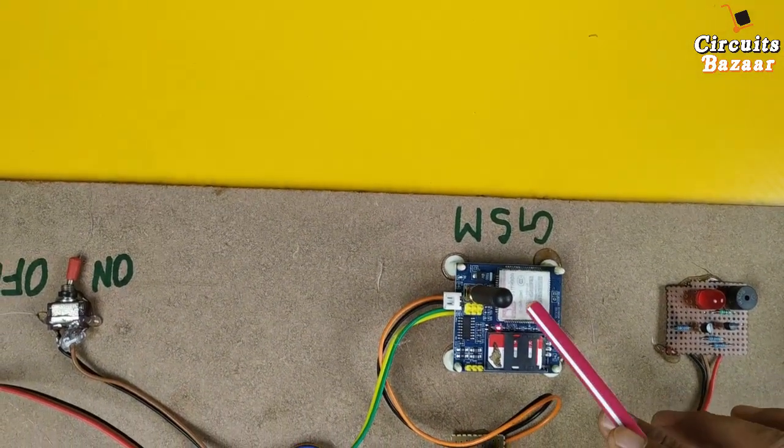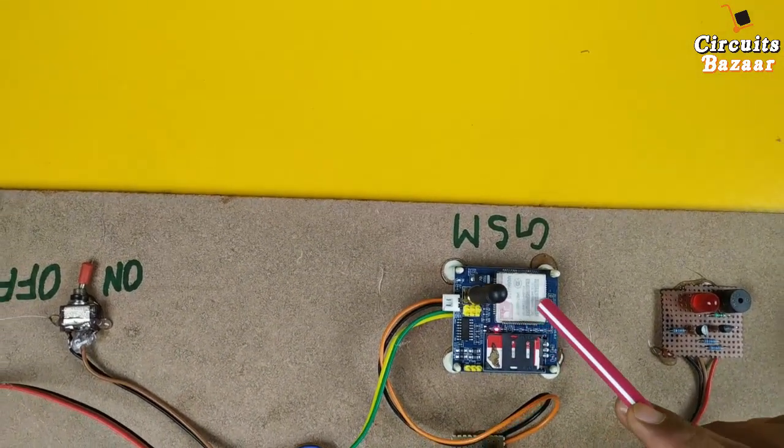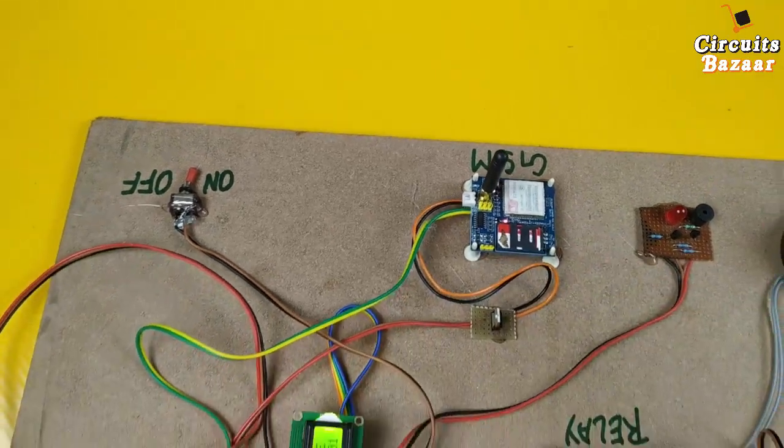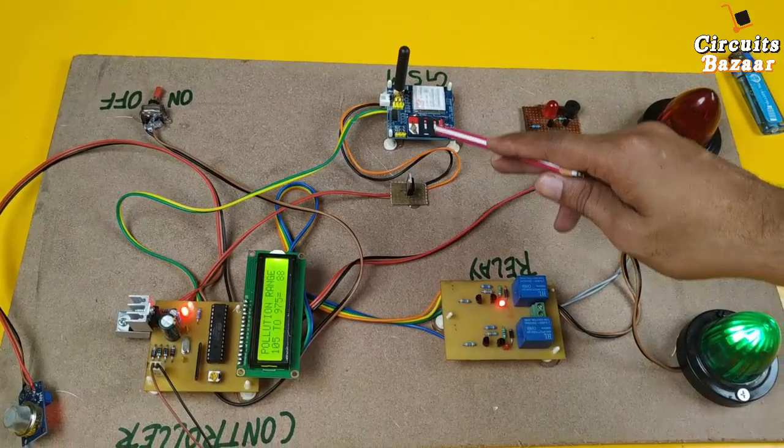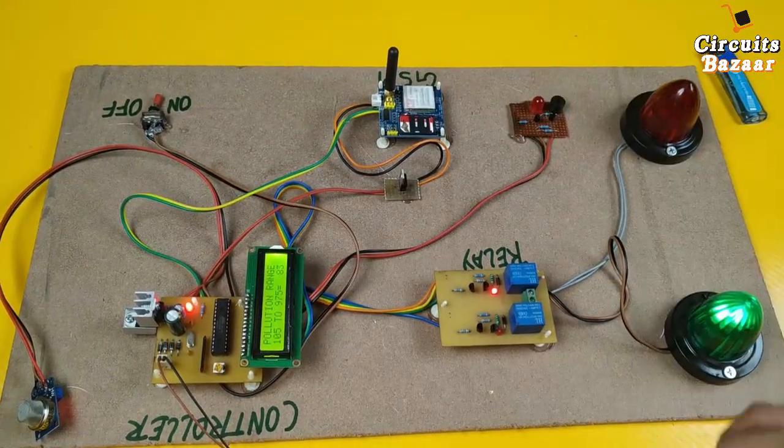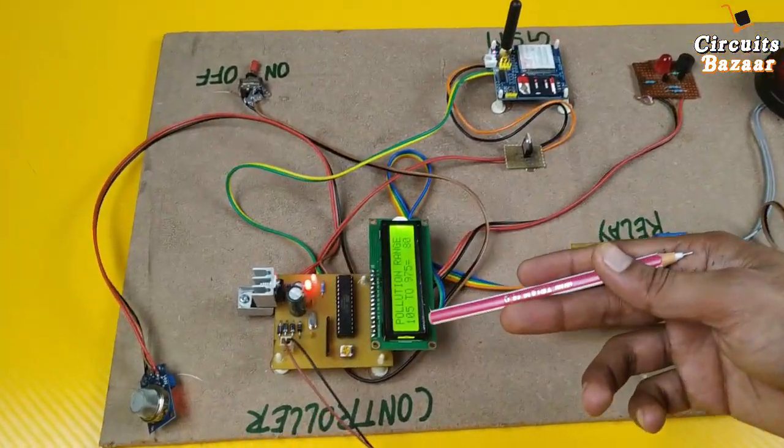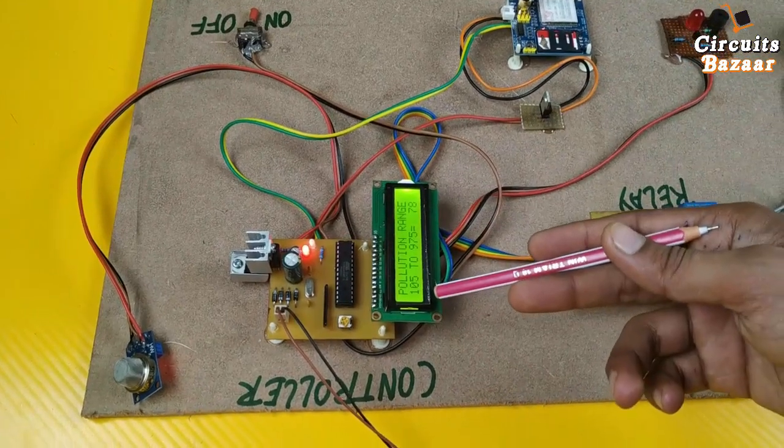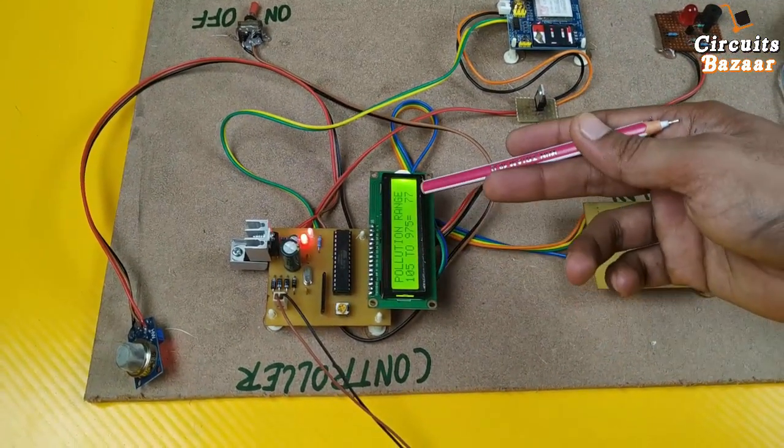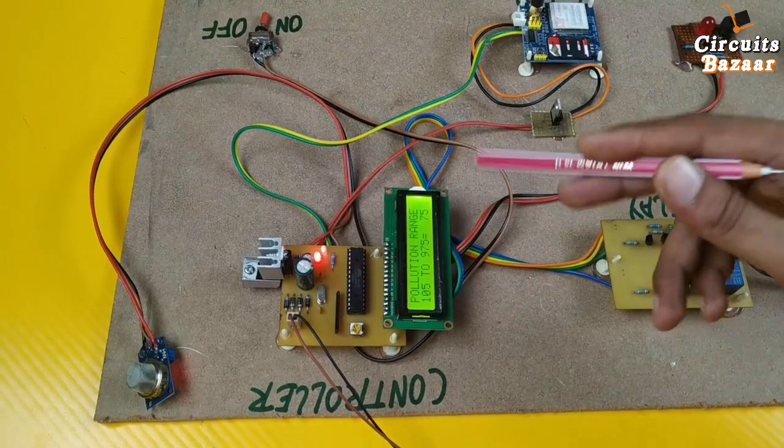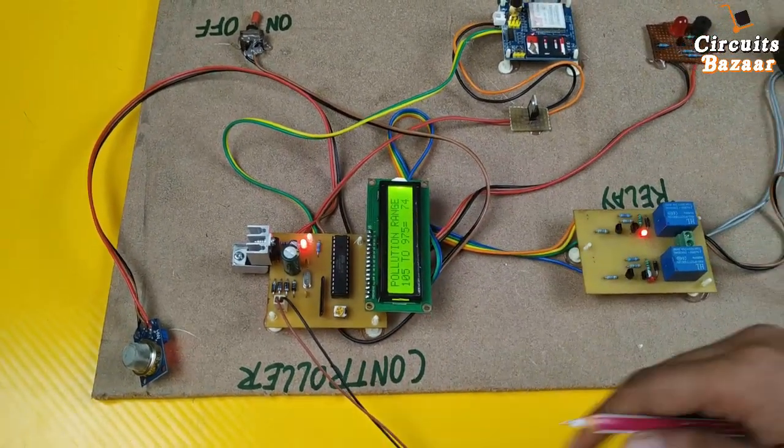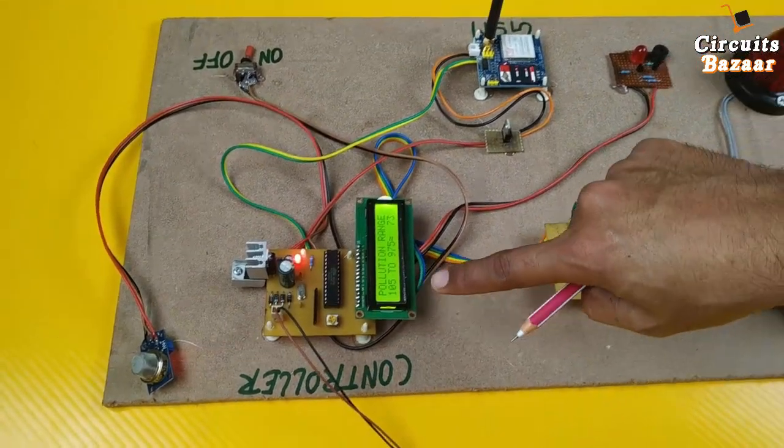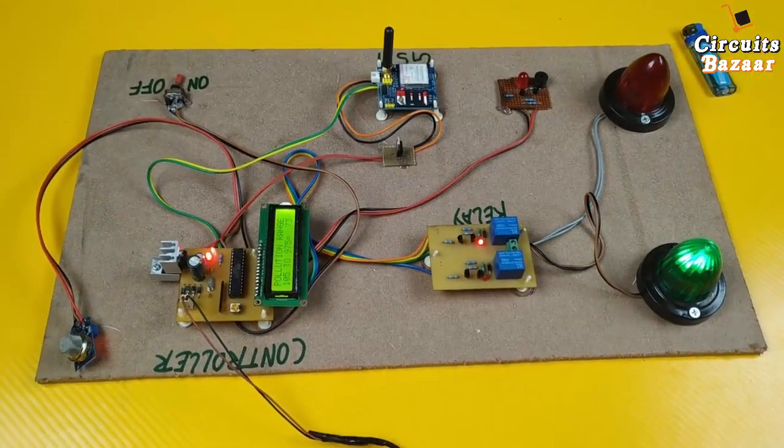And if you will see this LED, this LED is blinking fast. Now it started blinking slowly - it means GSM modem got the signals. If GSM modem didn't get the signal it will keep on blinking fast, but as soon as it gets the signals of the tower it will start blinking slowly. Right now LCD message shows pollution range between 105 to 975. It's showing 77, 76, but original range is between 105 to 975. So as soon as it detects pollution, the range will start increasing.